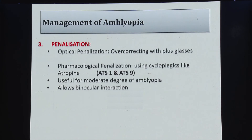Another important approach to correcting amblyopia is penalization — it could be optical penalization with over-correcting plus lenses, or pharmacological penalization. PEDIG studies have again shown that atropine is as good as part-time occlusion in moderate amblyopia.